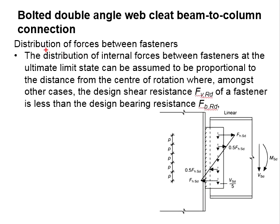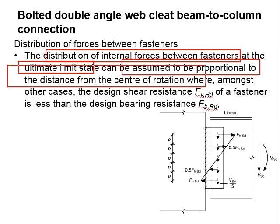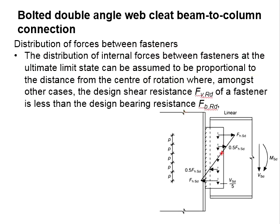The distribution of the internal force between the fasteners at the ultimate limit state is assumed to be proportional to the distance from the center of rotation. This is reflected by this diagram. Assuming the rotational axis will be at the mid-height of the cleat,